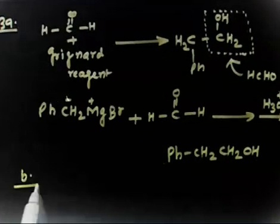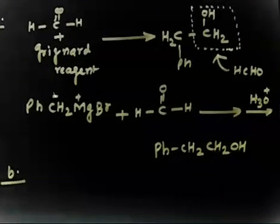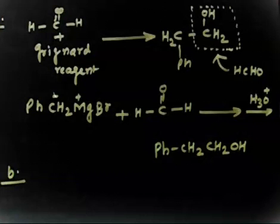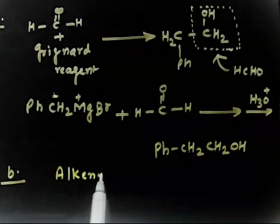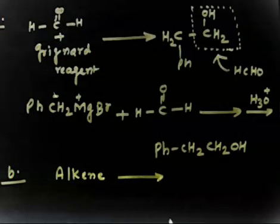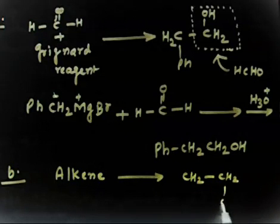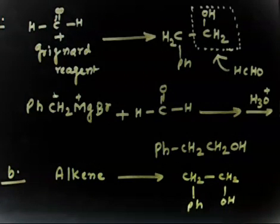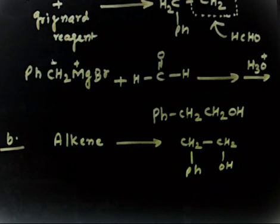Part B: you have to prepare 2-phenyl ethanol from a suitable alkene. From alkenes you have to prepare 2-phenyl ethanol — CH₂CH₂OH with a phenyl group on position number 2. You take an alkene and prepare this compound. You can use hydroboration-oxidation, or you can use oxymercuration-demercuration.